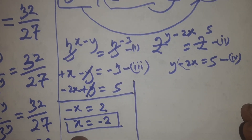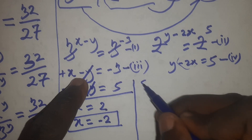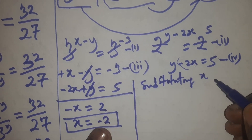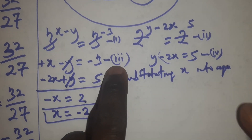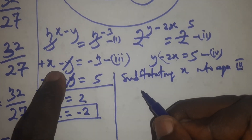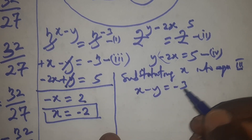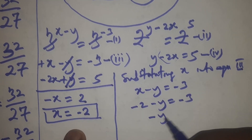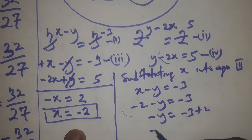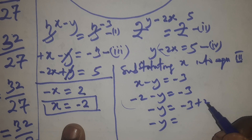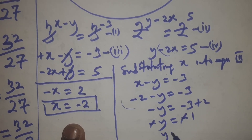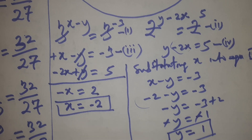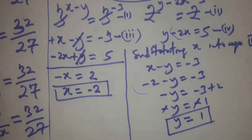Substituting x equals minus 2 into equation 3: minus 2 minus y equals minus 3, so minus y equals minus 3 plus 2, which is minus 1, giving y equals 1. The key answers are x equals minus 2 and y equals 1.